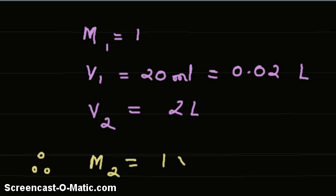The given molarity is 1, given volume is 20 ml converted to liters by dividing by 1000, that gives 0.02 liter, and final volume is 2 liters.